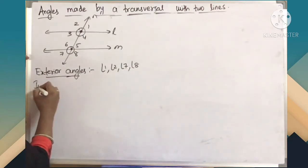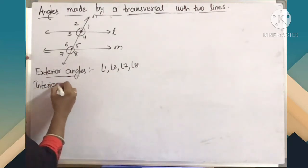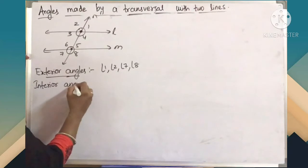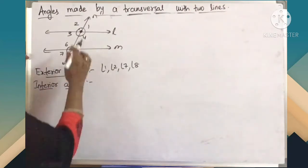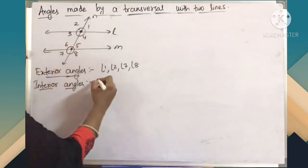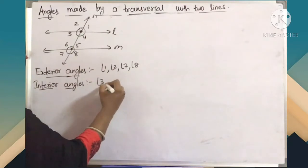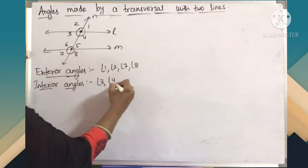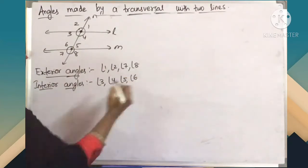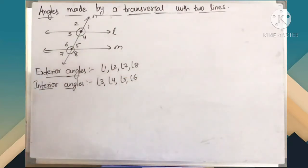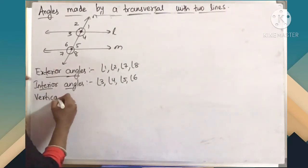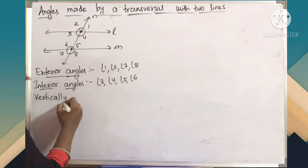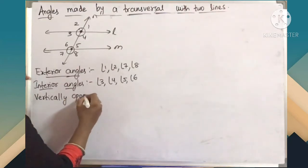Coming to next, interior angles. Interior angles are inside of the figure. So angle 3, angle 4, angle 5 and angle 6 are the 4 interior angles.